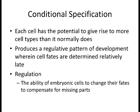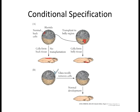Everything depends on the type of interactions cells end up having later—in reference to the placenta, implantation in the uterus. Those are the three modes of specification. In conditional specification, if you move cells from one spot to another, they will respond differently based upon signals, morphogen gradients, and cell-to-cell signaling in that particular area.